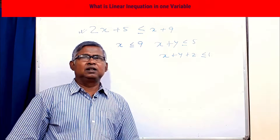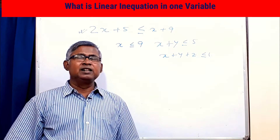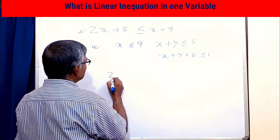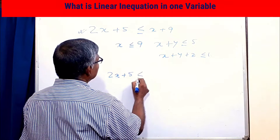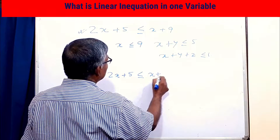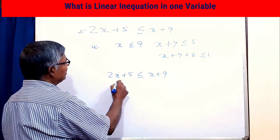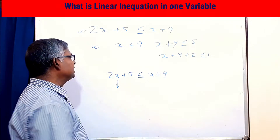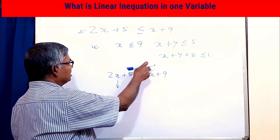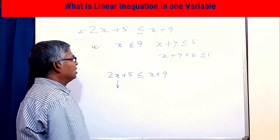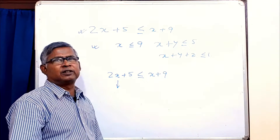Students, let us learn what is a linear inequation. Suppose 2x plus 5 is equal to x plus 9. Here you see only one variable is related, so it is a simple inequation and the highest power of x is 1. That is why it is called a linear inequation.